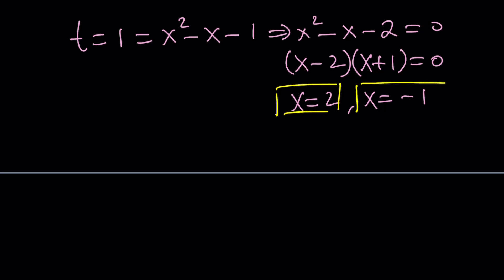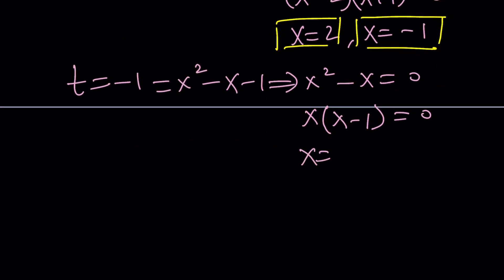But again, with exponential equations, we have to be extra careful. Now with the other t value that I have, negative 1, set it equal to x squared minus x minus 1. This time you're going to add 1 to both sides. That's going to give you x squared minus x equals 0. Hey, that's also factorable. Nice. And we get x equals 0, x equals 1. Wow, we're getting four different solutions. Amazing, right?